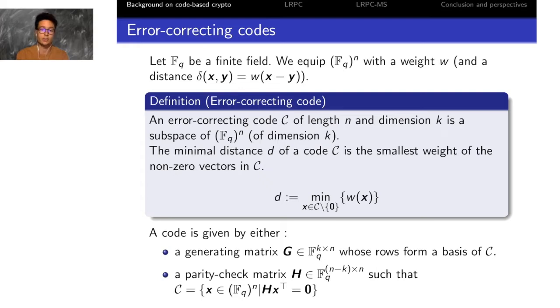You can define the code either by giving what is called a generating matrix, or by duality by giving a parity check matrix which contains vectors orthogonal to the code.